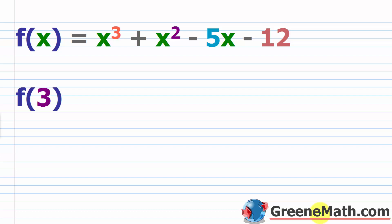So we have f of x equals x cubed plus x squared minus 5x minus 12. And we want to start by asking what is f of 3. We know that this is just asking us to plug in a 3 for each occurrence of x, and find out what is the value of the function when that happens.